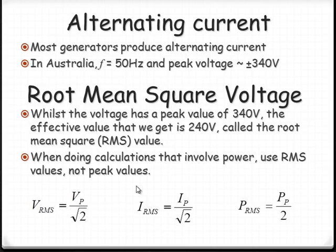Current is the same and power is divided by 2 or half the effective power. And that's because power equals V times I over root 2 times root 2. So if you had V times I over root 2 times root 2, you'd get over 2.